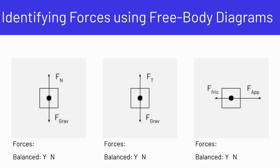Here we have three free body diagrams. We often use abbreviations — one letter or a short abbreviation — for the forces. For the first one, we have an upward arrow labeled F sub n and a downward arrow labeled F gravity. The first force is the normal force — that's what the N means — and the second force is the force of gravity.